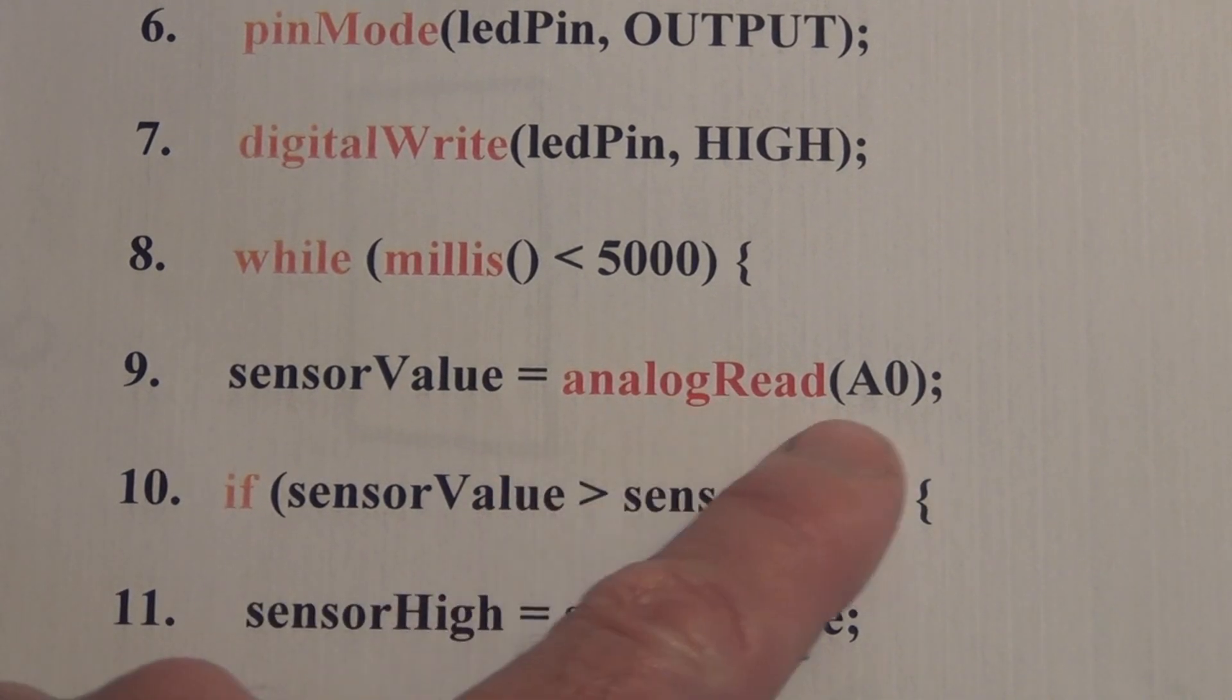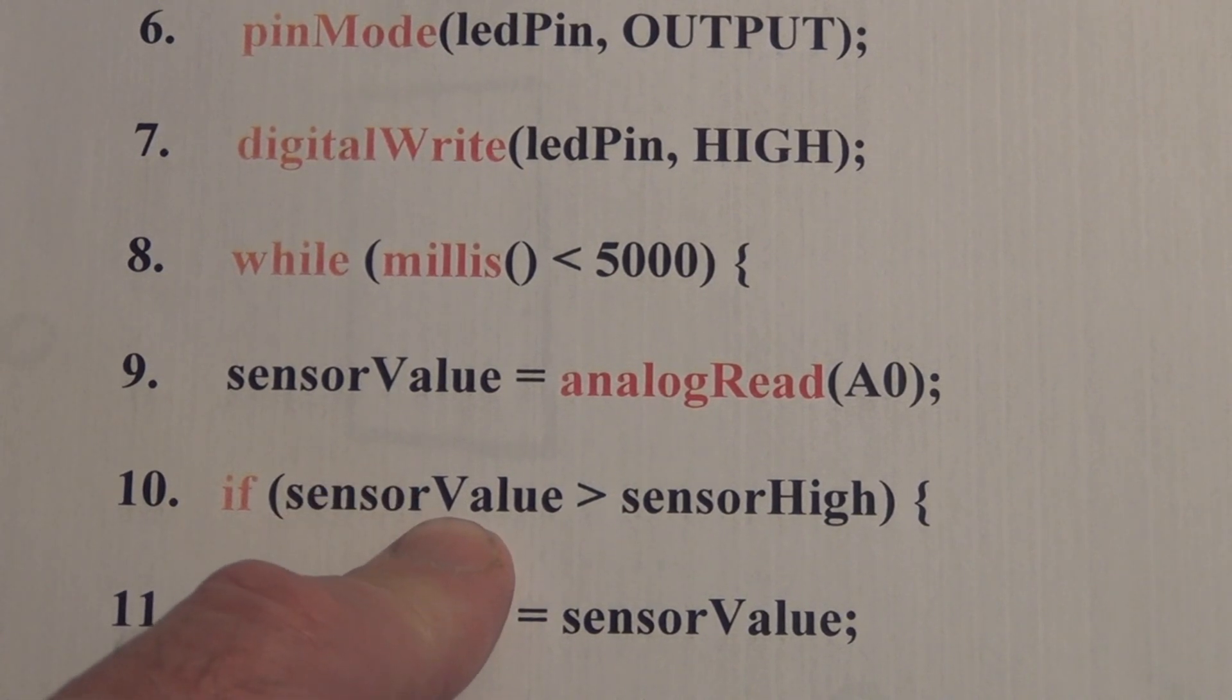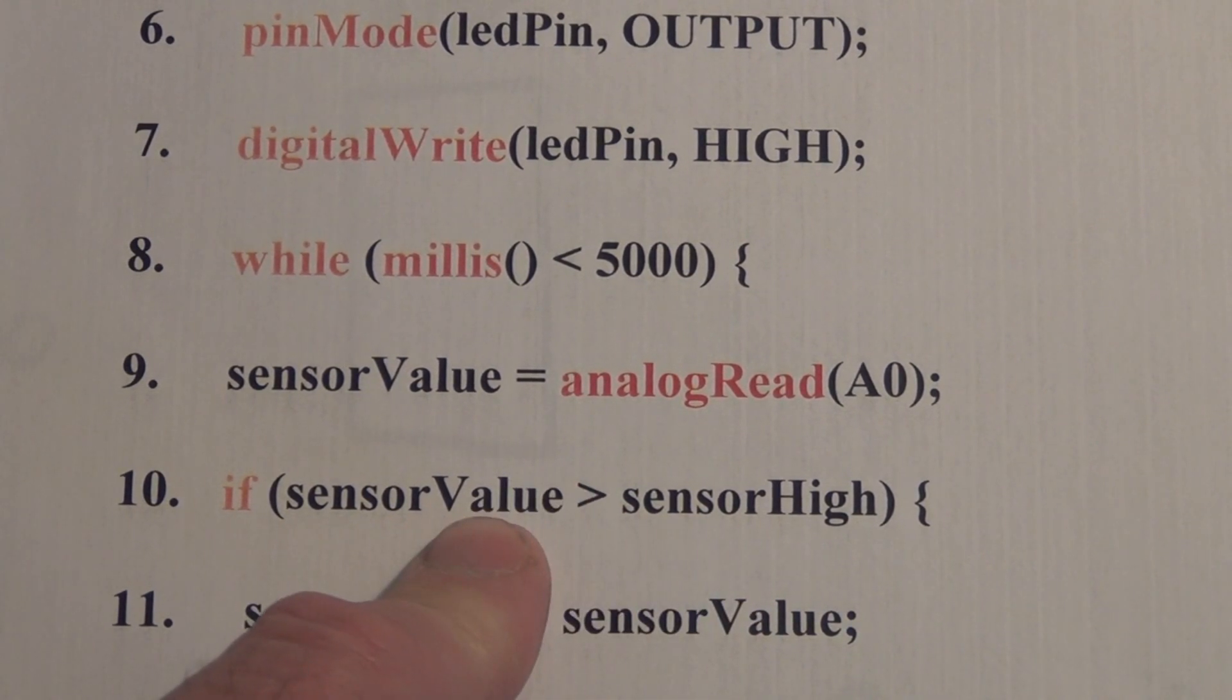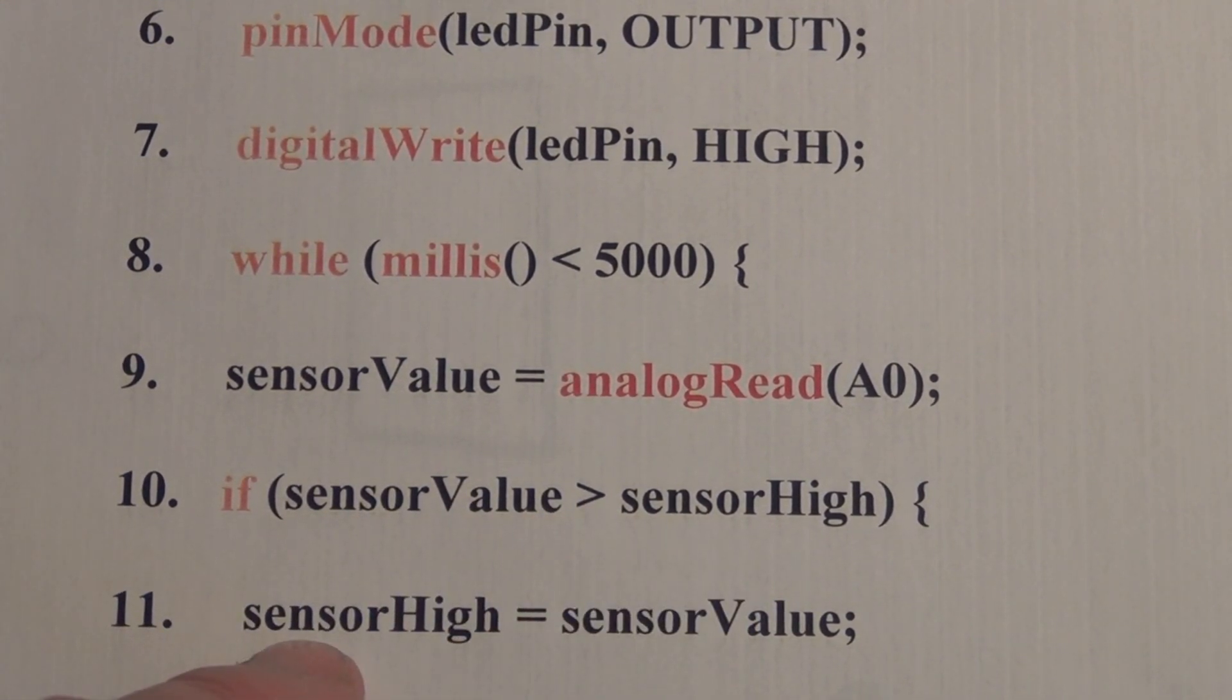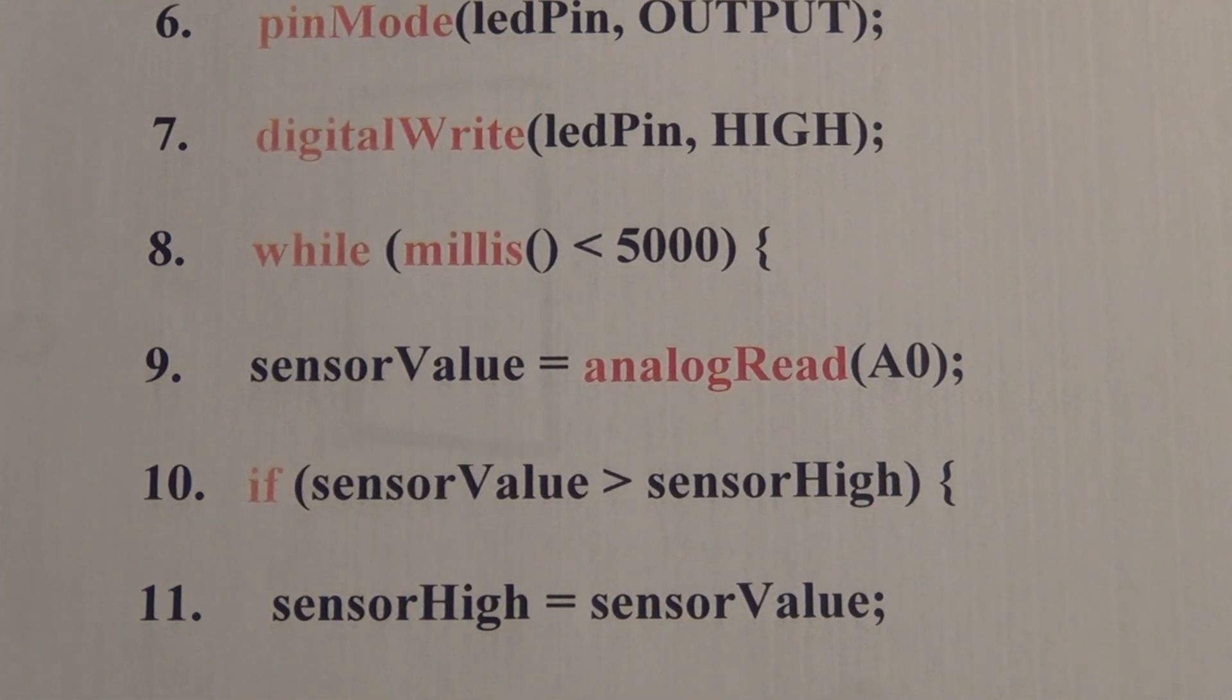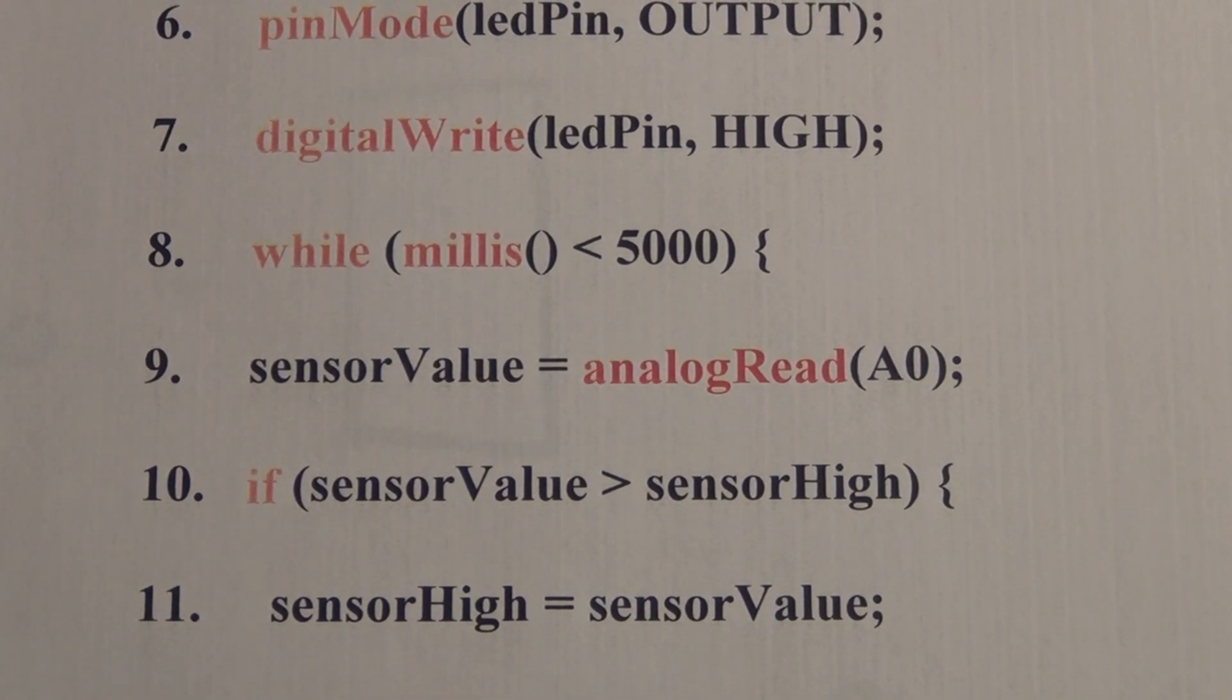So you can see here we do analog read and we read the sensor value then it takes that current value and compares it to sensor high which we initialized at zero and is definitely going to be above that. So then if sensor value is greater than sensor high sensor high is equal to the new sensor value and it does that for both high and low during that five second period.